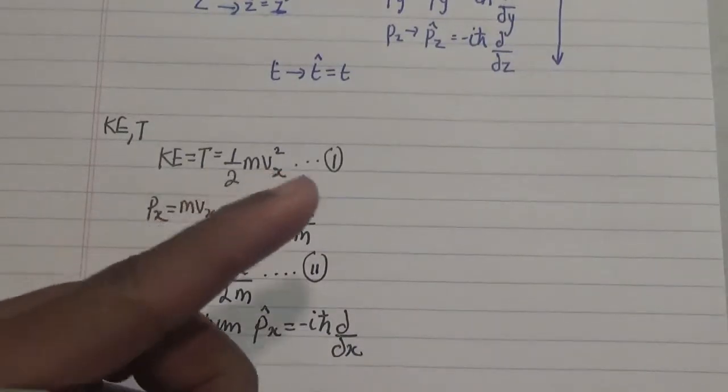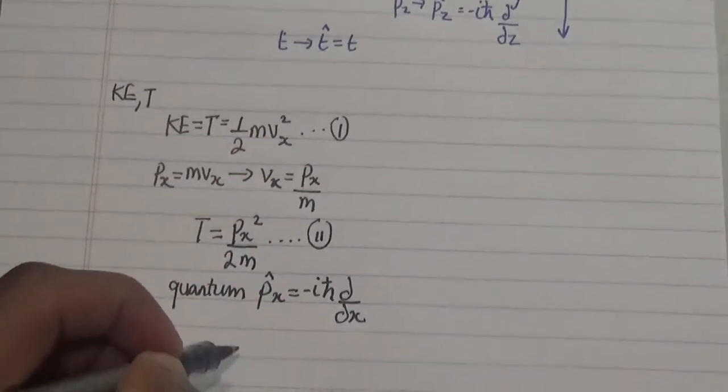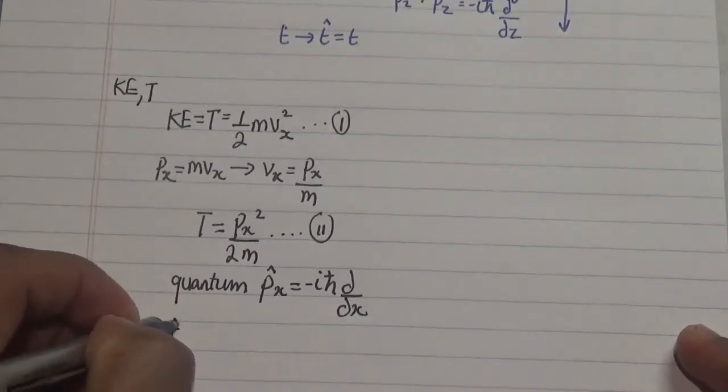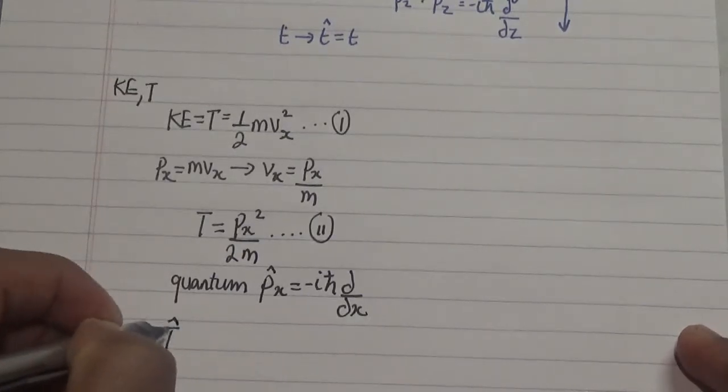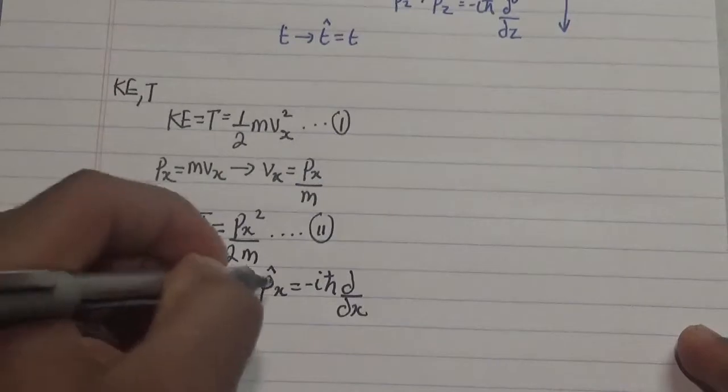In a single particle in one dimension, so what we have here is the operator. Now since initially this is classical, but now I'm transforming this into an operator by introducing our momentum operator.